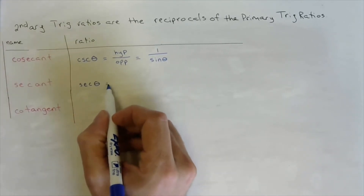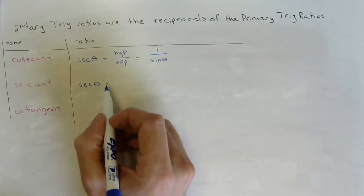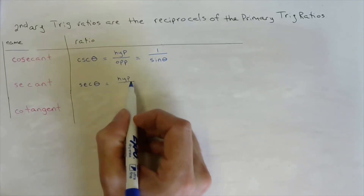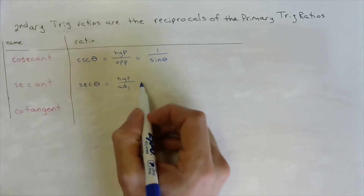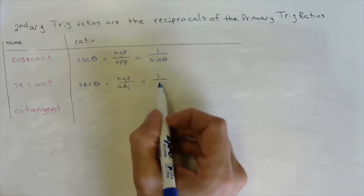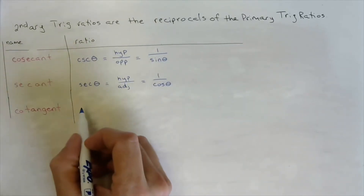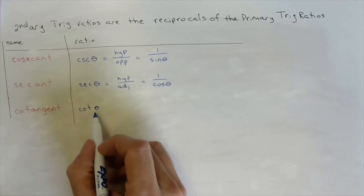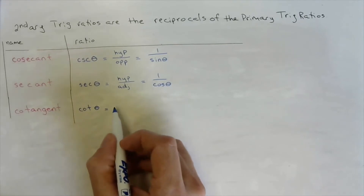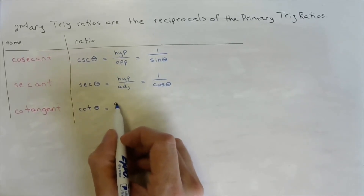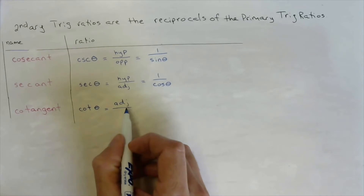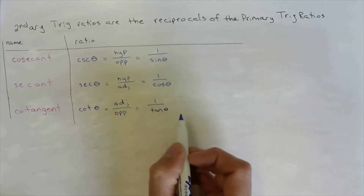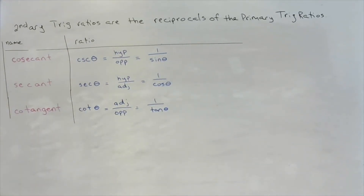The secant of theta is the reciprocal of cosine, so it is the ratio of the hypotenuse over the adjacent side — one over cosine. Cotangent of a given angle is the reciprocal of tangent, which is opposite over adjacent, so cotangent is adjacent over opposite — one over tangent of angle theta.